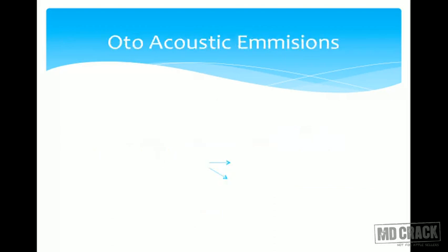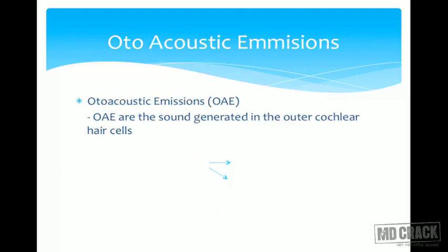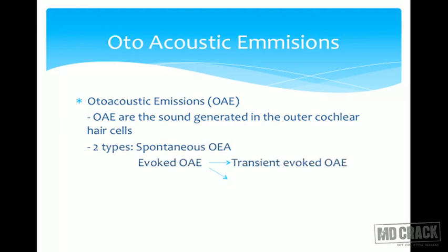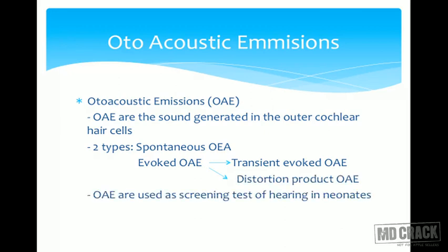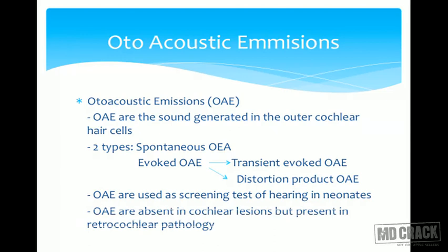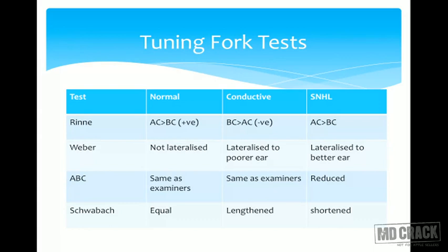Otoacoustic emissions (OAEs) are sounds generated in the outer cochlear hair cells. There are two types: spontaneous and evoked. Evoked OAEs are of two subtypes: transient and distortion product. They are used as a screening test for hearing in neonates — an important MCQ point. OAEs are absent in cochlear lesions but present in retrocochlear pathology.